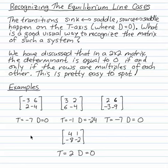What's a good way to recognize an equilibrium line source and equilibrium line sink in a first-order linear system? The transitions sink to saddle and source to saddle in the trace-determinant plane happen on the T-axis, where D is zero, where the determinant is zero.